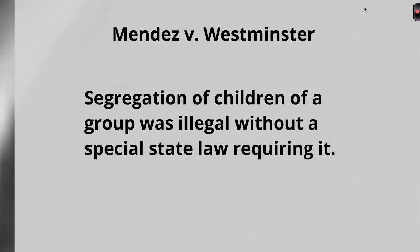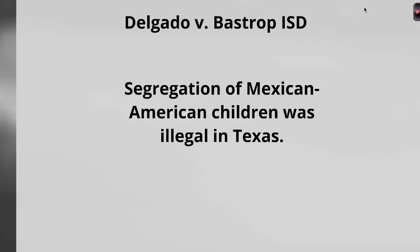Our next one is in Texas — Delgado v. Bastrop — and this one is going to be based on that Mendez v. Westminster case. In Texas, they decided that segregation of Mexican-American children was illegal. They sued Bastrop ISD, claiming that Mexican-American children were being segregated from other children without a law. The court agreed and ordered the school district to stop segregating Mexican-American children.